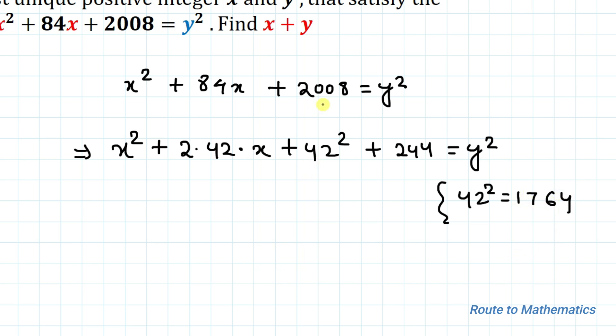I have written 2008 as 42 squared, that is 1764, plus 244 which is equal to 2008. So here we can apply the algebraic identity of a plus b whole square, that is x plus 42 whole square plus 244 equals y squared.